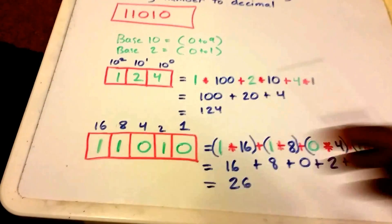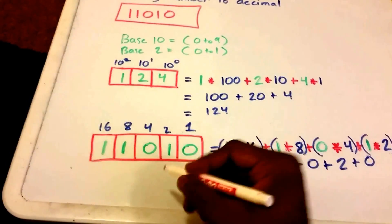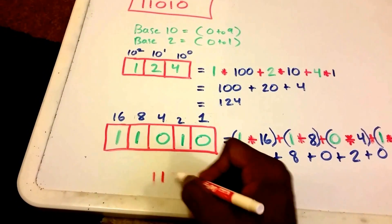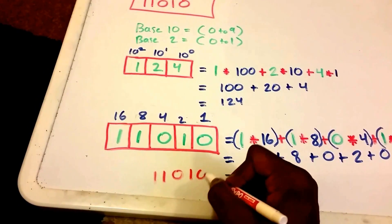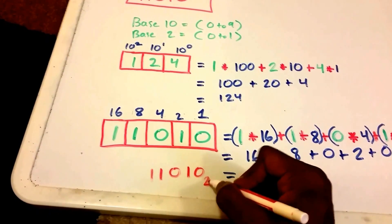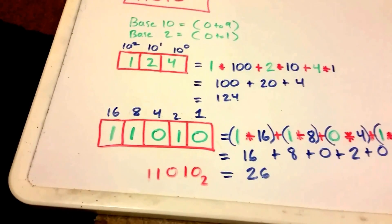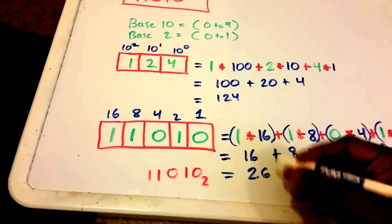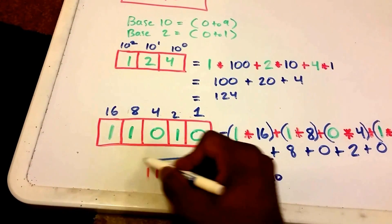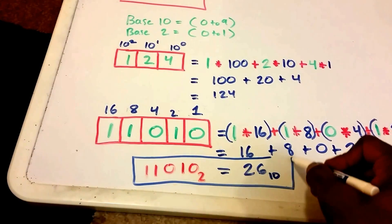And so our decimal number, which was 11010, is equal to - and this is base 2, usually put a little subscript 2 here - is equal to 26 in base 10, or subscript 10. And this is our answer.